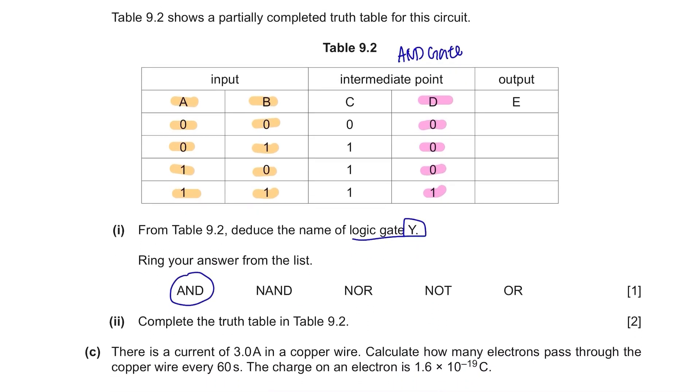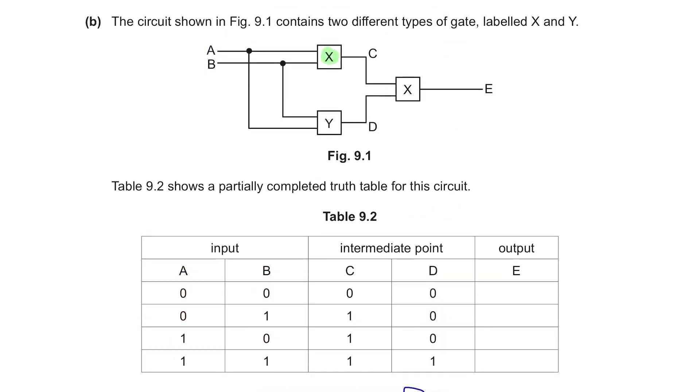Complete the truth table in table 9.2. We don't know what logic gate X is so let's first find that out. Inputs are A and B and the output is C. 00 produced 0, 01 produced 1, 10 produced 1, 11 produced 1. This is an OR gate. So these two are OR gates. Here C and D are the inputs and E is produced. For an OR gate, 00 is 0, 10 is 1, 10 is 1, 11 is 1. So our final answer is 0, 1, 1 and 1.